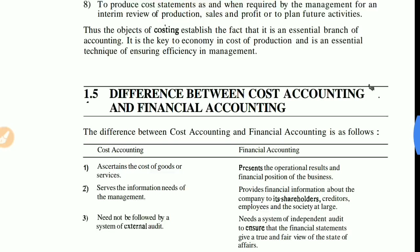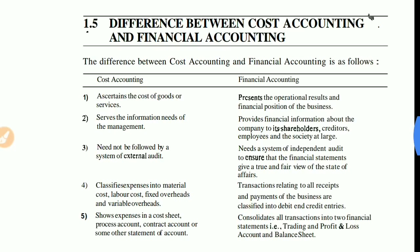The next topic is the difference between cost accounting and financial accounting — there are 11 points in total and we will cover them all in this lecture. The first difference: cost accounting deals with the cost of goods and services that are made or rendered, whereas financial accounting presents the operational results and financial position of the business.